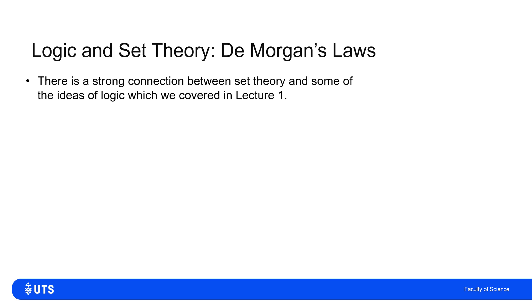We've already seen a lot of the strong connection between set theory and some of the ideas in formal logic. These are evident in the notation we use. The notation for AND is not the same as the notation for intersection, but it's similar. Also, the notation for joining two logical statements with OR is not dissimilar to the notation for the union of two sets. But these connections go a lot deeper than just notational convention.